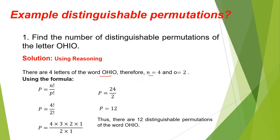Therefore, the number of permutations n is 4, and the letter O appears 2 times. Using the formula P equals n factorial over p factorial, we substitute the value for n, which is 4, and the value for p, which is 2.